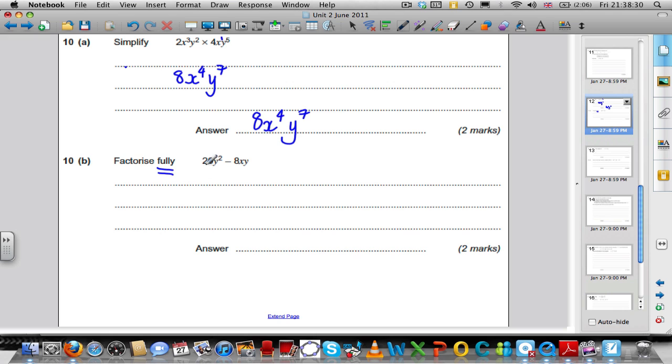Factorise fully this. What goes into 20Y squared and 8XY? Well, certainly a Y does. What goes into 20 and 8? The biggest thing we can think of, probably 4. So, divide out by 4Y. 20Y squared divided out by 4Y would leave me with 5Y. And, 8XY divided by 4Y leaves me with 2X. And, it's a subtract because we had a minus in here. So, this is the factorised version. 4Y multiplied by 5Y minus 2X. If you want to check you've got the right answer, times it out and check it works.